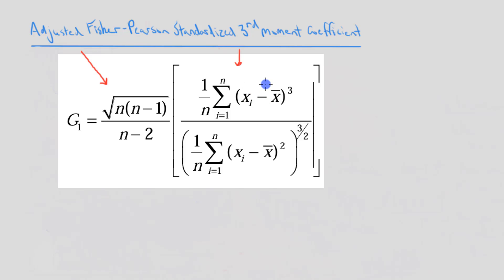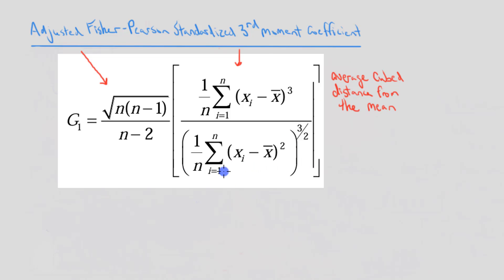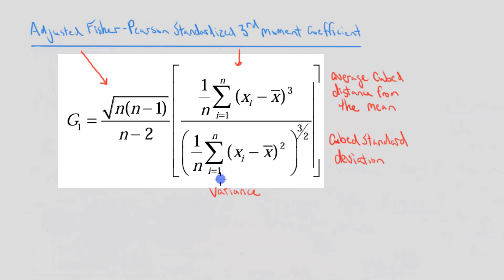Let's start by looking at the numerator. We have the difference from each score and the mean, cubed, and then we're adding all of those up and dividing by n. What this is doing is finding the average cubed distance from the mean. In the denominator, we're finding the distance from the mean for each score, squaring it, adding all of them up, and dividing by n — which you might recognize as calculating the variance. We're then taking the square root of that, which is the standard deviation, and taking it to the third power — essentially the cubed standard deviation.